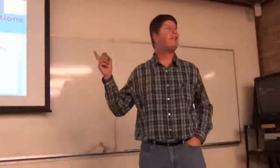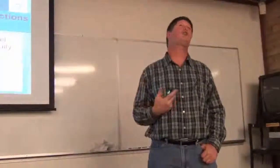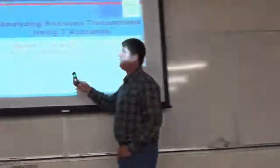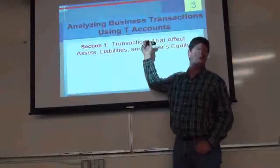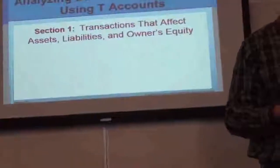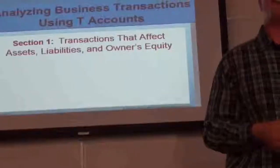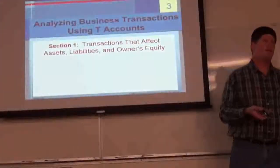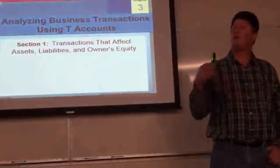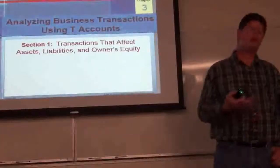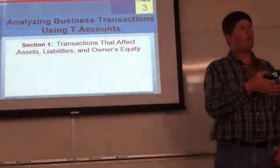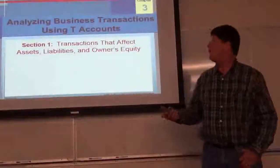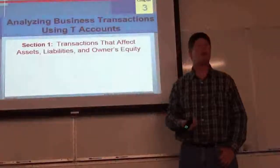So what we've been working on tonight is learning what T-accounts are, and we're using those to record activity in the different accounts that we use. We have to look at and analyze the transaction — know if it's an asset, a liability, owner's equity, revenue, or an expense account that we're affecting. Step one as accountants: take a transaction and analyze it. Think about what accounts are going to be affected, what type of accounts those are, how much the impact is, then apply the debit and credit rules and record it in a T-account.